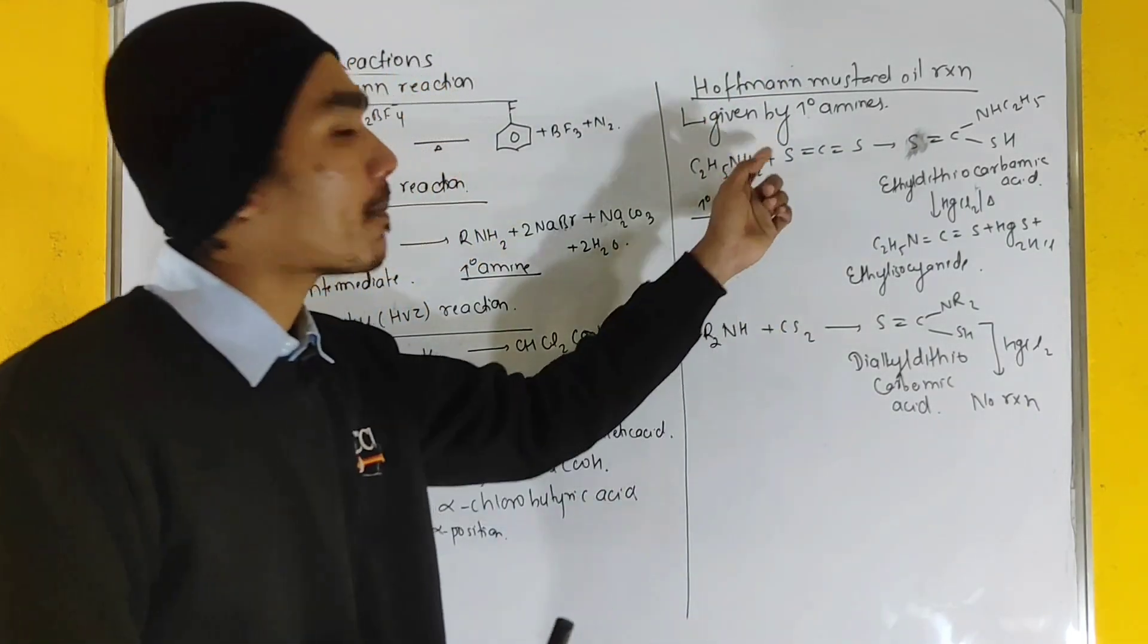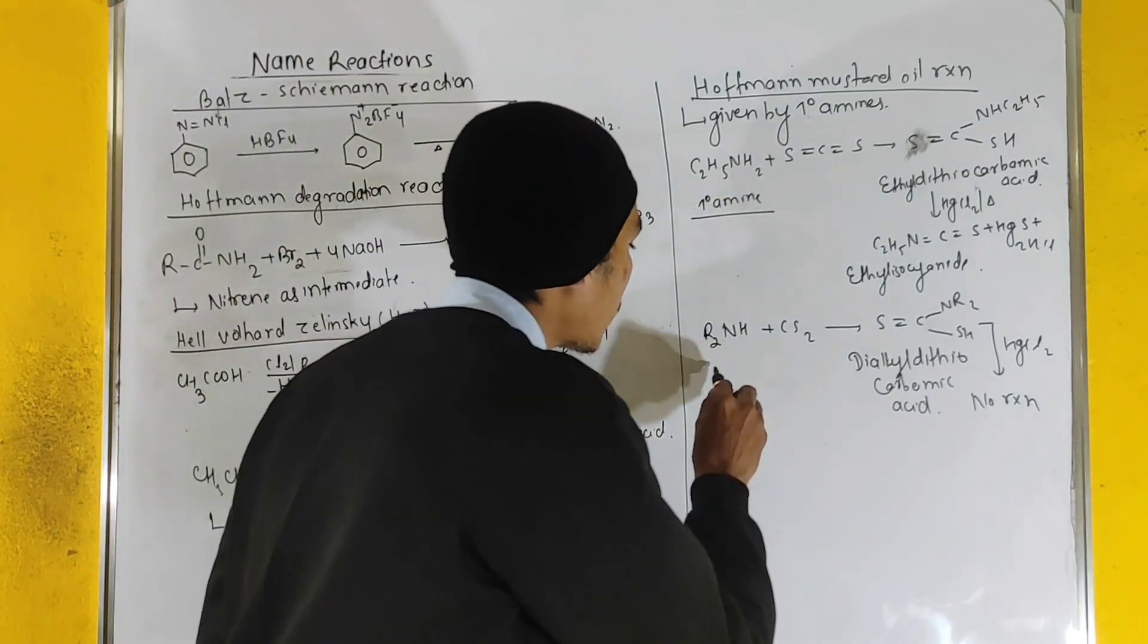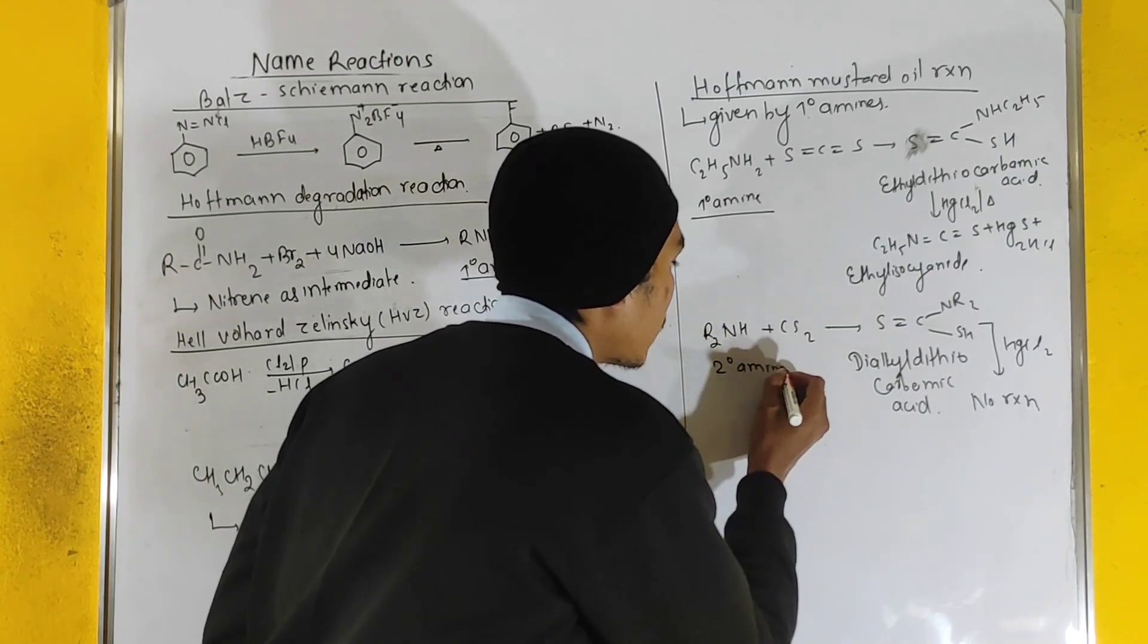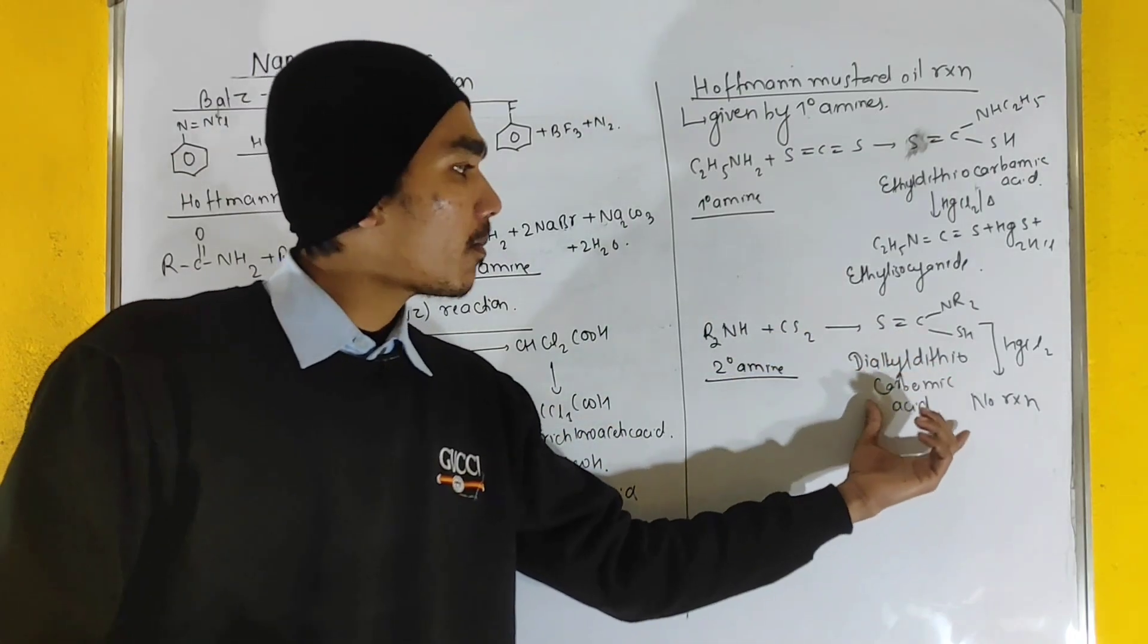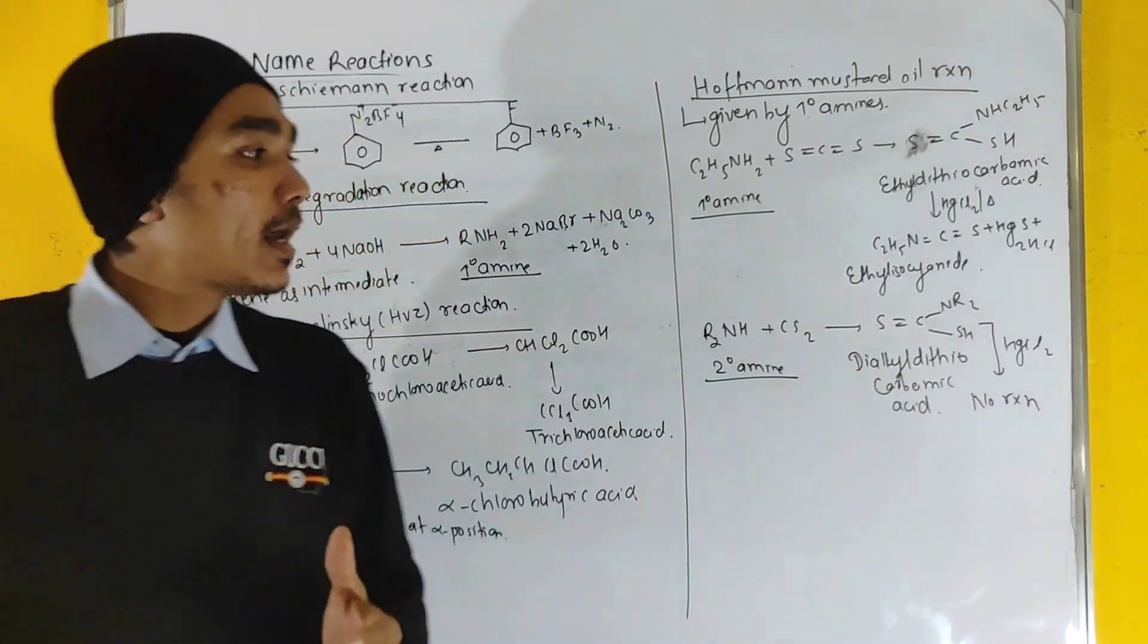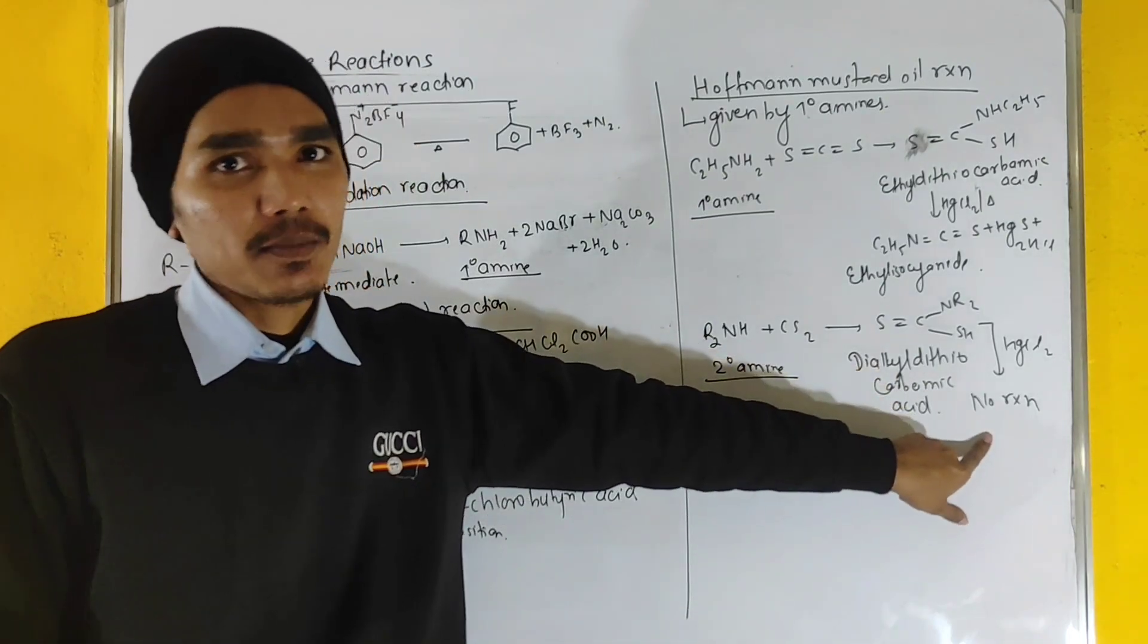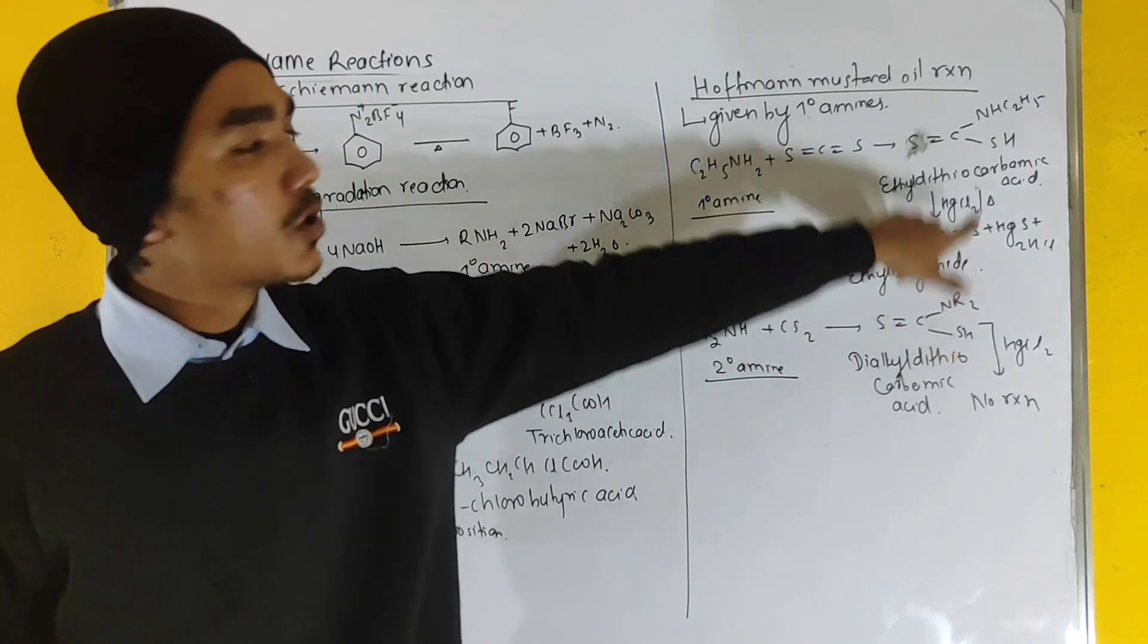In Hoffmann mustard oil reaction, we do this with primary amines. With secondary amines, we use carbon disulfide to form compounds. Further with HgCl2 reaction, we get alkyl isocyanate formation.